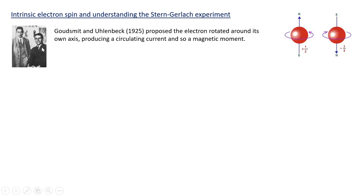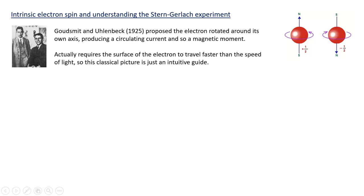To understand this we need to introduce a new property of the atom called intrinsic electron spin. This will help explain the Stern-Gerlach experiment. Two American graduate students, Goudsmit and Uhlenbeck, in 1925 proposed that the electron rotates around its own axis, producing a circulating current. Circulating currents are associated with magnetic moments. The idea is that the electron spins like a globe — like the Earth around its own axis. This is a classical intuitive guide, since someone showed the surface of the electron would have to travel faster than the speed of light to produce the required magnetic moment, which is not allowed.